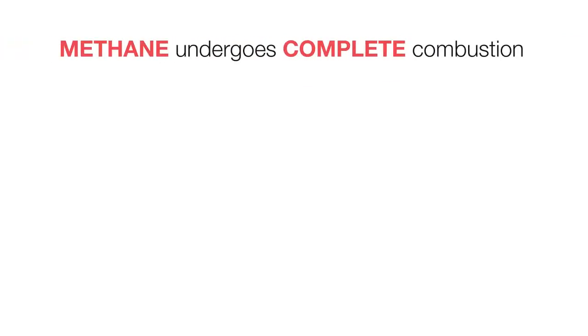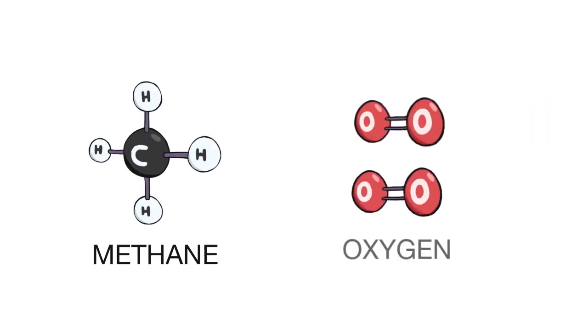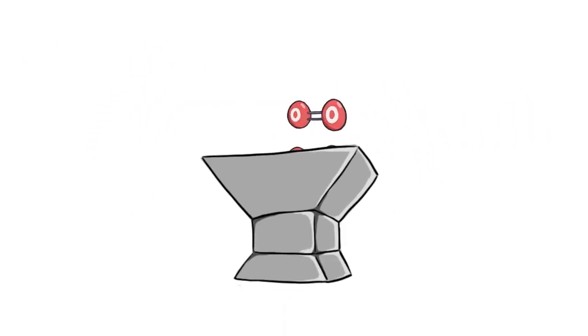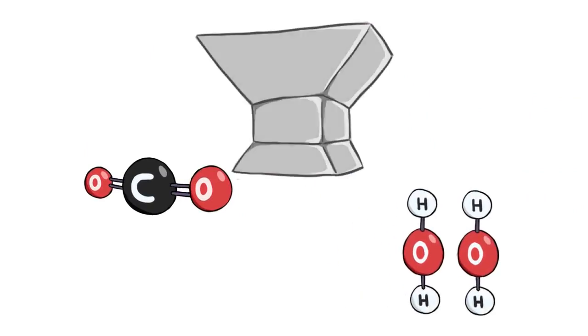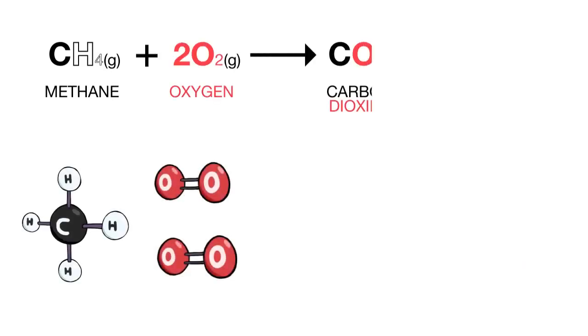When methane undergoes complete combustion, that is in a plentiful supply of air, it produces carbon dioxide and water, as shown by the equation CH4 gas plus 2O2 gas gives CO2 gas plus 2H2O gas.